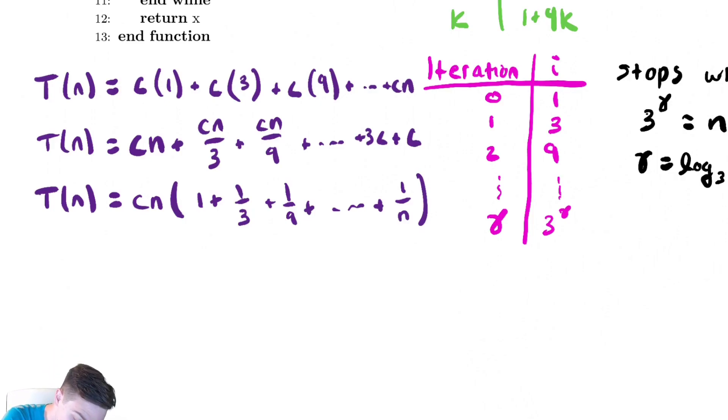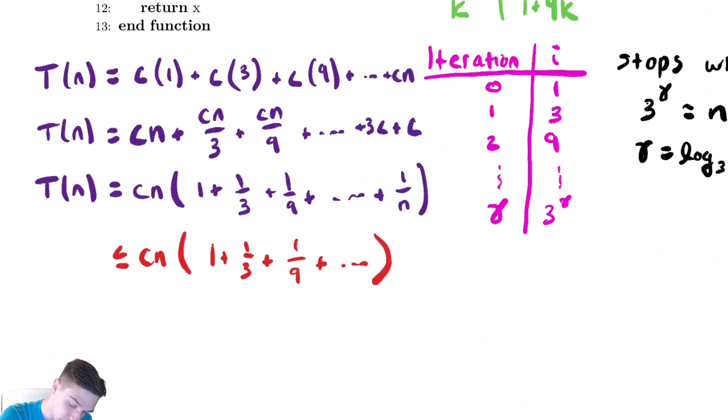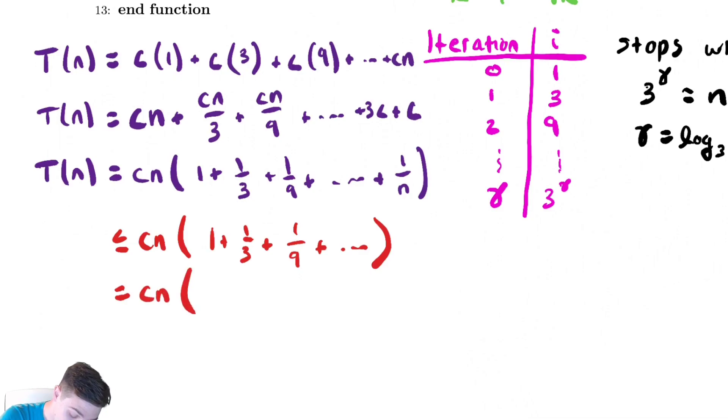Now I need to bound this above. To bound it above, I'm going to replace that finite geometric summation with an infinite geometric series. So I have 1 plus a third plus a ninth plus an infinite summation there. This is equal to cn times, using a similar formula to what we had before, an infinite geometric series. It converges to 1 over 1 minus the common ratio, which in this case is a third. We're continually dividing by 3. So this equals 1 over 2 thirds, which is 3 halves. So this is 3 cn over 2.